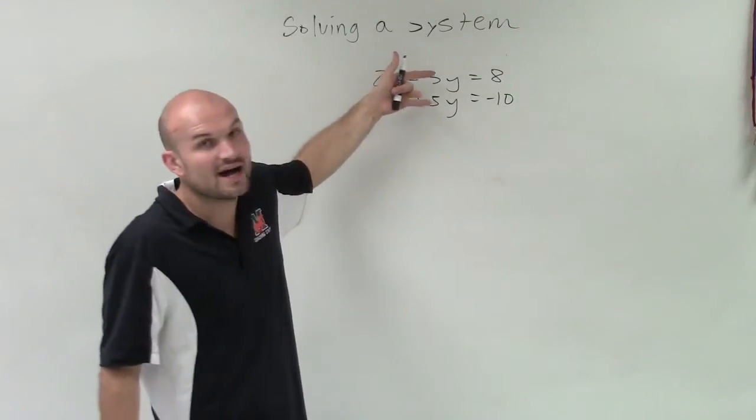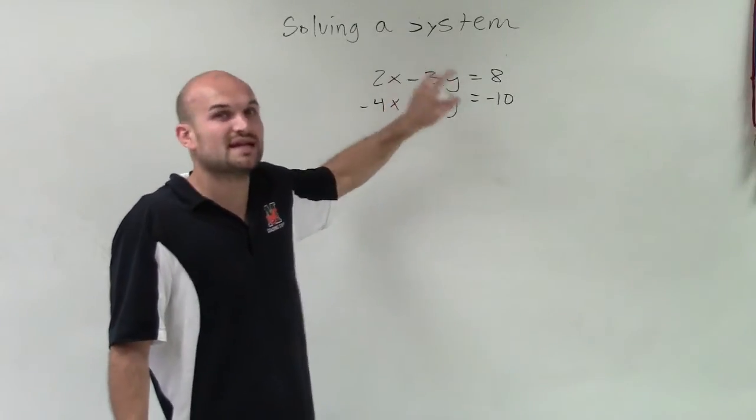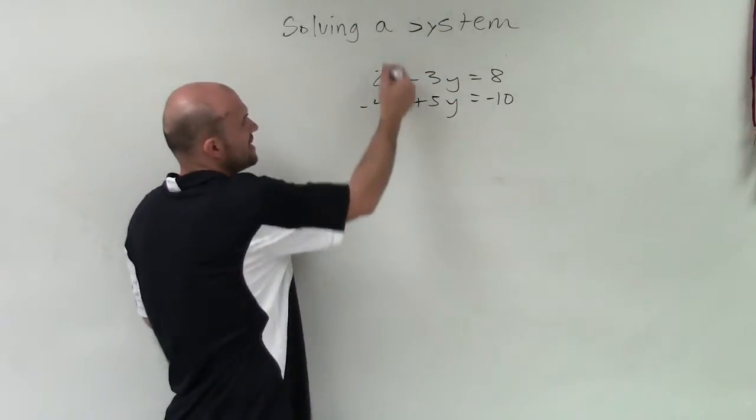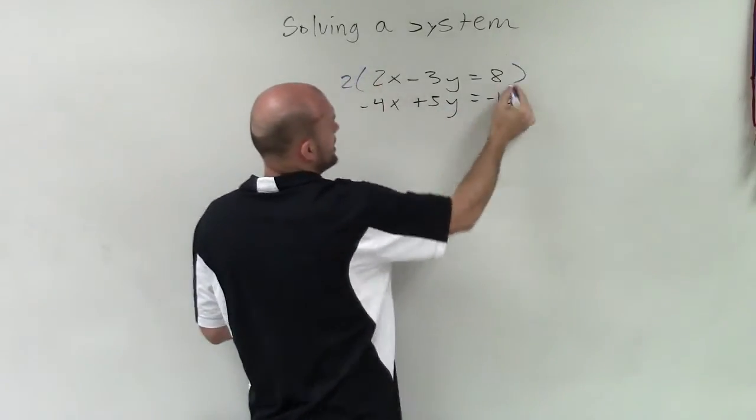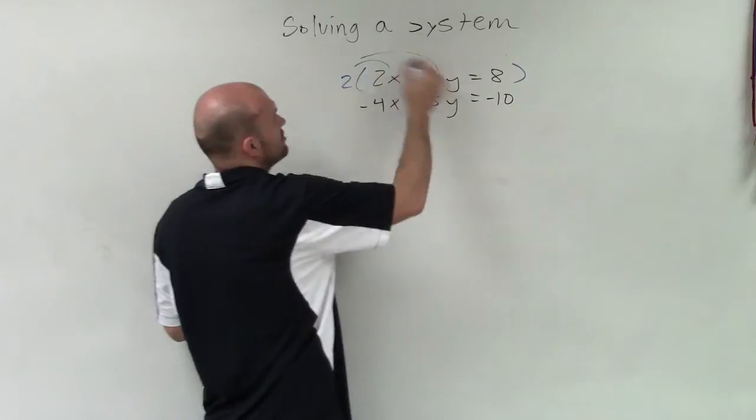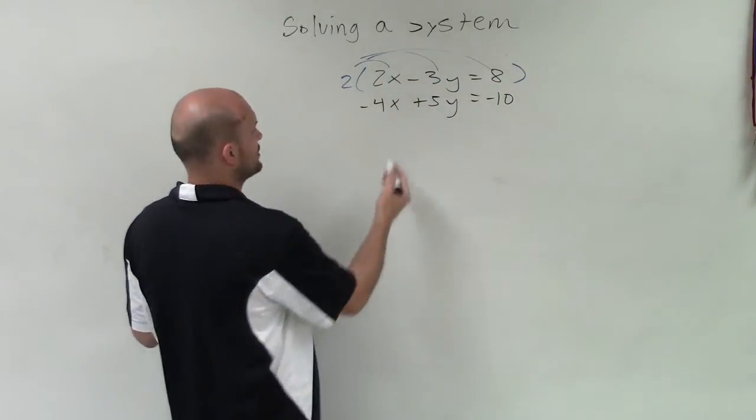Over here, between 3 and 5 would be 15. So therefore, I'd have to multiply a multiplier by the top equation and the bottom equation. To get these to have the same coefficient, regardless of the sign, I'm going to multiply by a multiplier of 2. Make sure you multiply this multiplier by every single term in your equation to produce an equivalent equation.